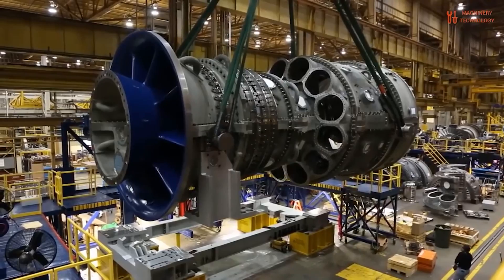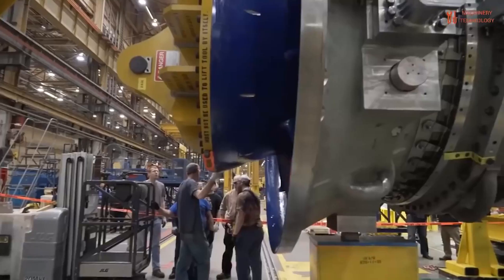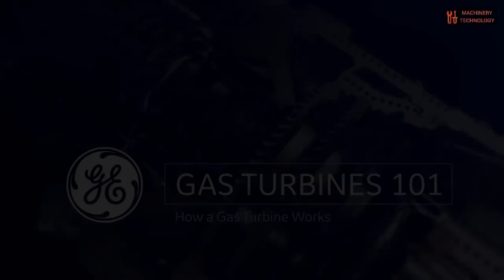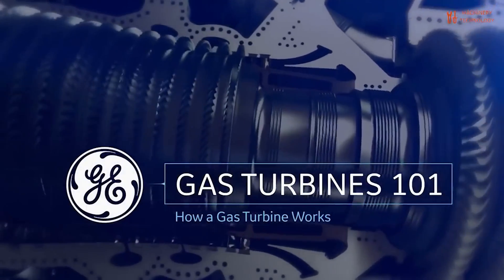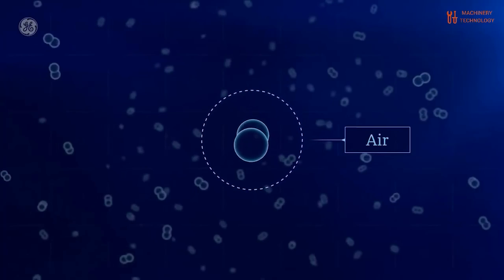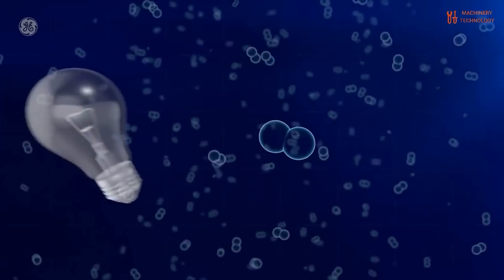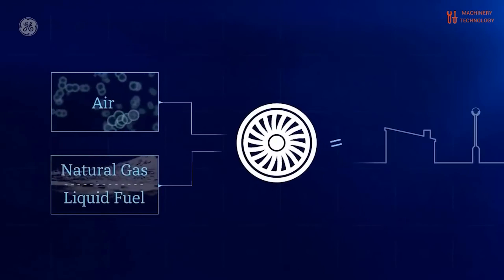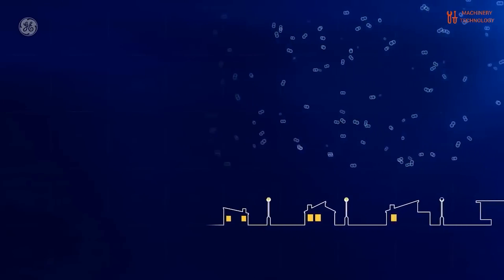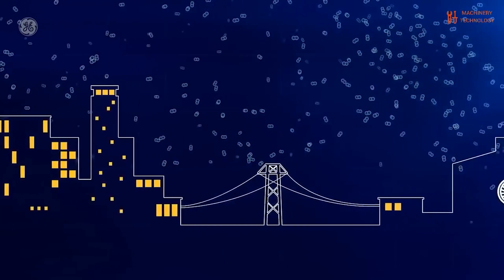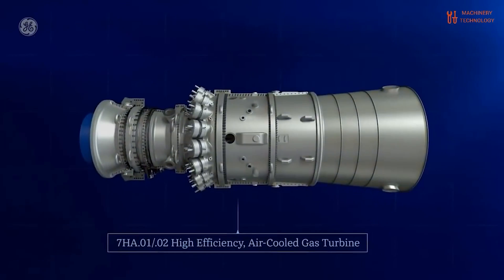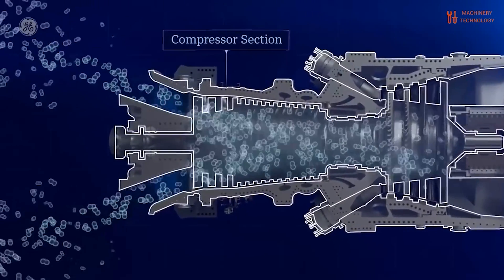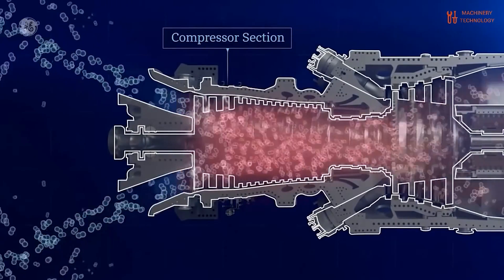Gas turbine engines are smaller than their counterparts of the same power. The main disadvantage of the gas turbine is that, compared to an engine of the same size, they are expensive. Because they spin at such high speed and because of the high operating temperature, designing and manufacturing gas turbines is a tough problem from both the engineering and materials standpoint. Gas turbines also tend to use more fuel when idling, and they prefer a constant rather than a fluctuating load. That makes gas turbines great for things like transcontinental jets, aircraft, and power plants, but explains why you don't have one under the hood of your car.